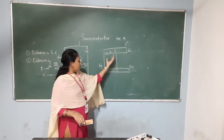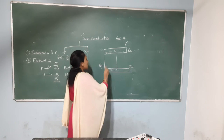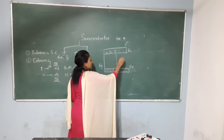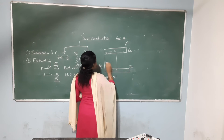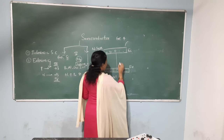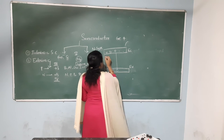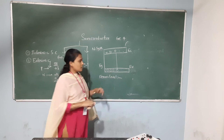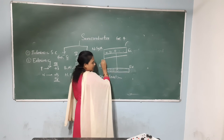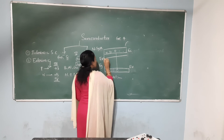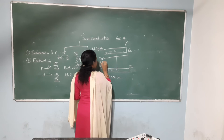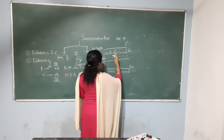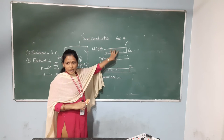Before going to the energy gap, what is the Fermi level of N-type and P-type? Fermi level means: it is the top of the energy level at 0 degrees temperature, or at absolute temperature. In N-type semiconductors, the Fermi level EF is nearer to the conduction band. The donor level ED is also nearer to the conduction band in N-type semiconductors.